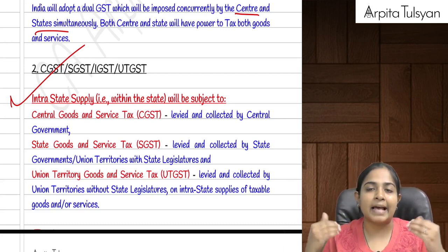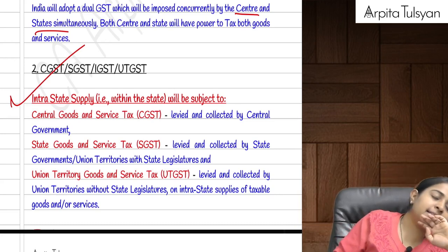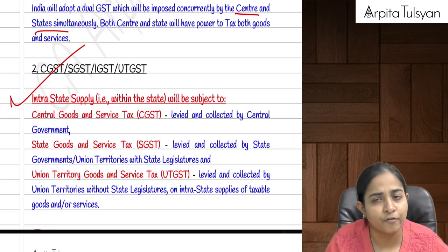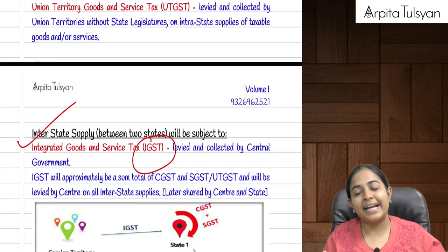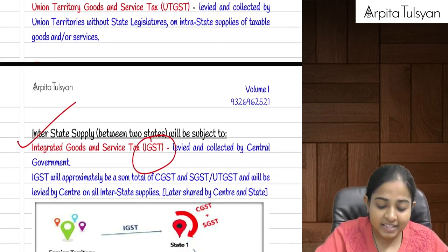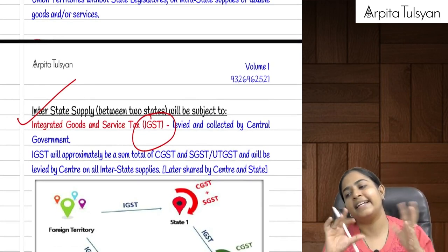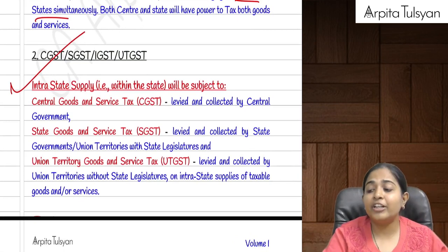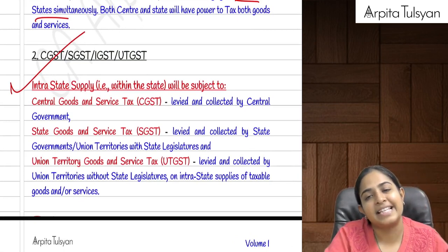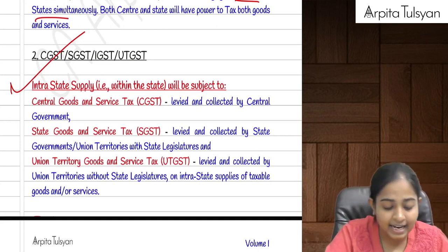Whenever there is an interstate supply — from one state to another state, for example Maharashtra to Gujarat — IGST, that is Integrated GST, will be levied. This is collected by the central government, and later this IGST tax will be distributed amongst the state and the center. For intrastate supply — within the same state — two types of taxes are collected: CGST and SGST or UTGST.